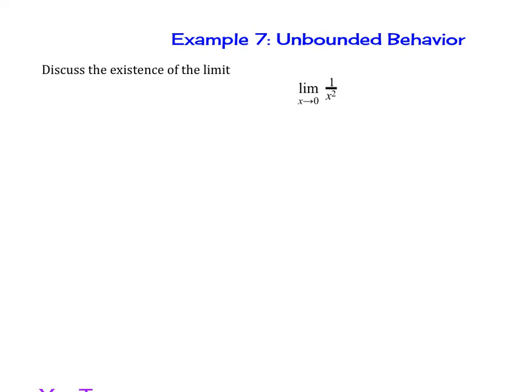So we're going to discuss the existence of the limit, this limit here, limit as x approaches 0 of 1 over x squared. So notice if we plugged in 0 here, we are going to get 1 over 0. Let's go ahead and graph this to see what's going on here.